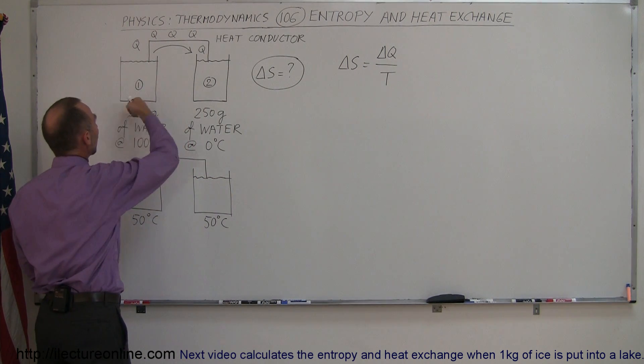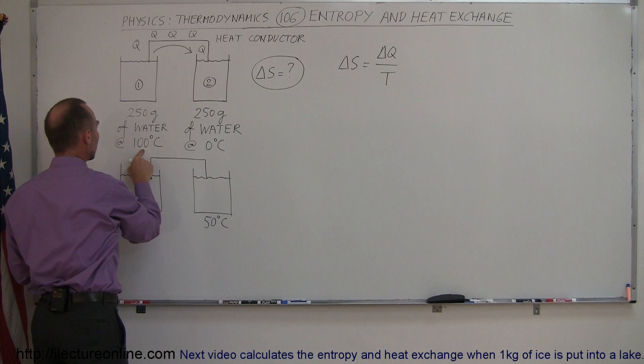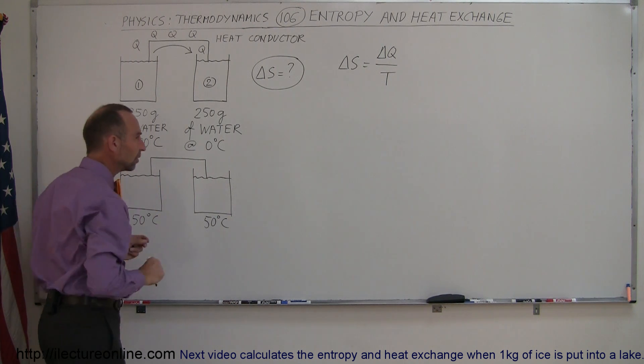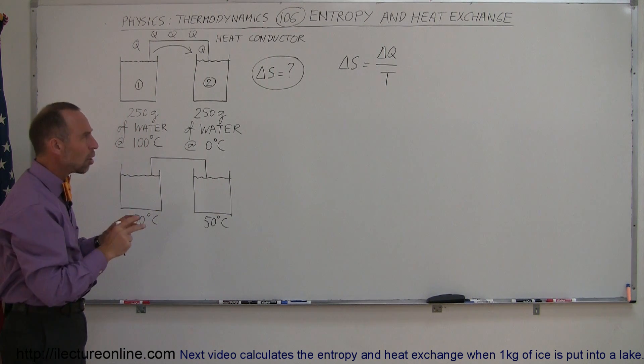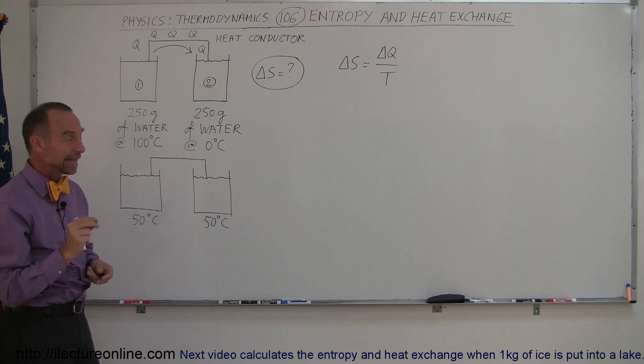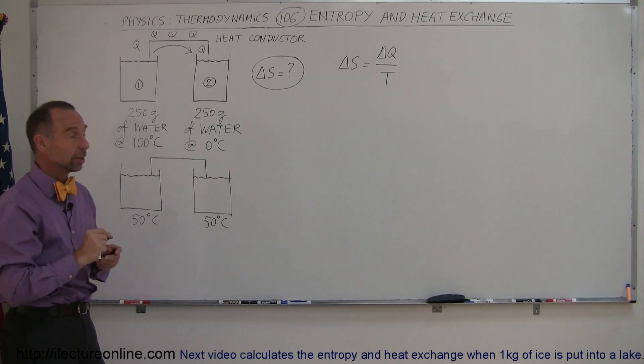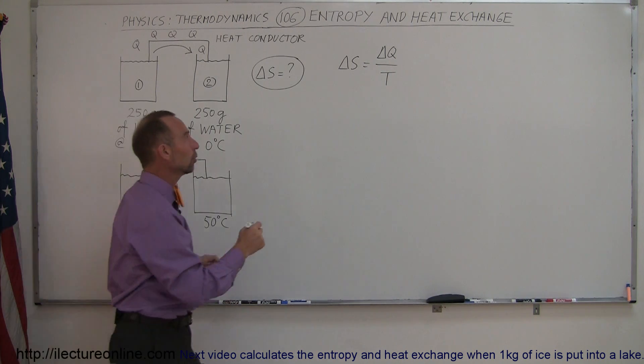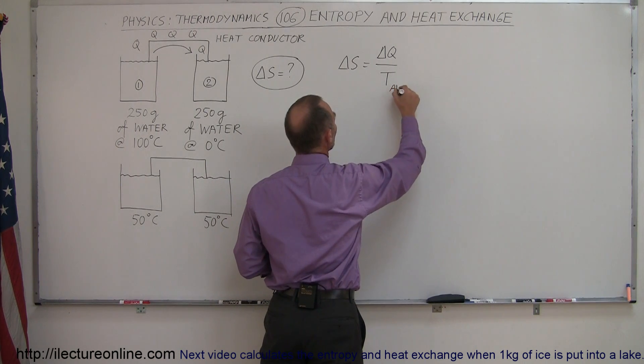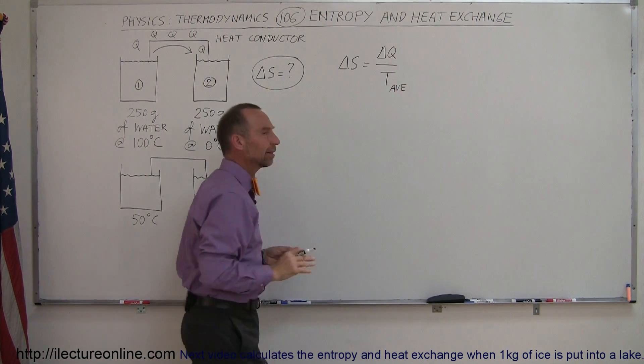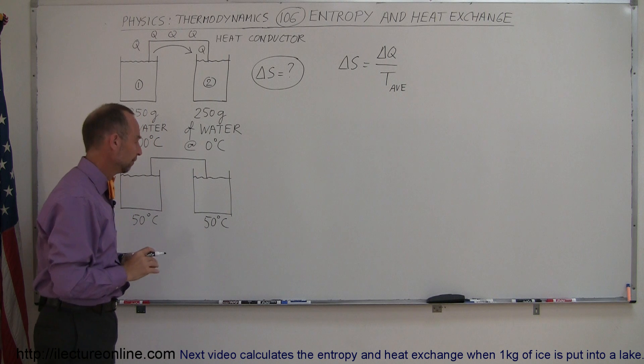So if we say that the change in the entropy is equal to the amount of heat being exchanged divided by the temperature which has happened, and notice, let's take cup number one first, that starts at 100 degrees centigrade and it ends at 50 degrees centigrade. So it's a relatively small change in the temperature.